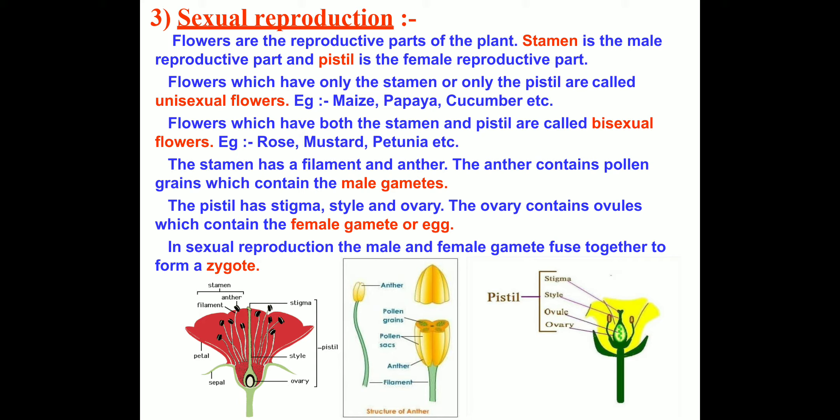Here you can see the parts of the flower. Stamen is the male part of the flower, made up of two parts: filament and anther. Pistil is the female part of the flower and has three parts. The uppermost part is the stigma, the long tube-like structure is the style, and the circular portion is the ovary.